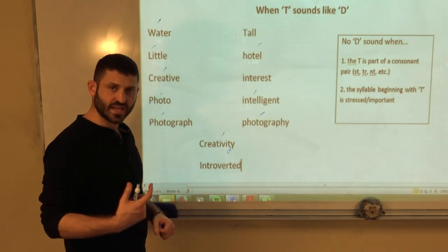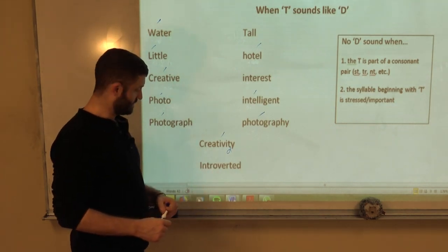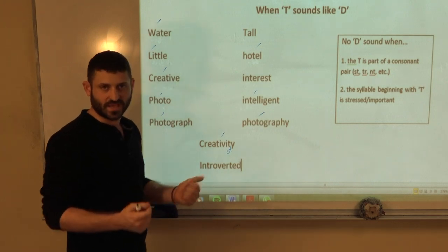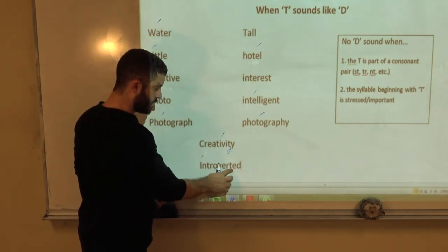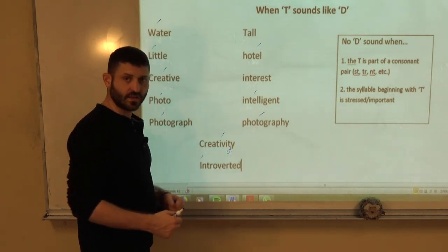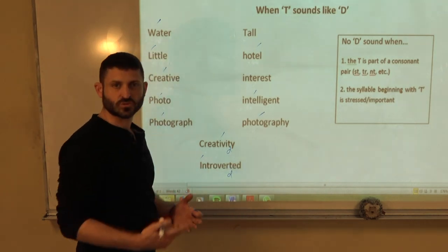Introverted. Introverted. We have a T sound here. But, we also have an N and an R. The T is buried between two consonant dominant sounds. So, we can't make it a D. Stress is here. This T, before is ER, vowel dominant. After E, vowel dominant. And, it's not stressed. So, we want to make it a D. Introverted.